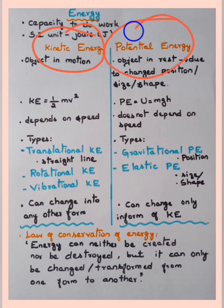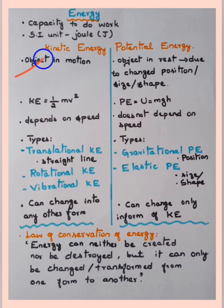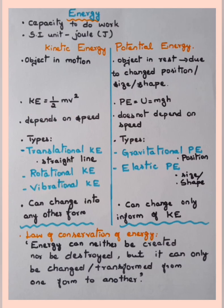Kinetic energy is possessed by an object when it is in a state of motion, whereas potential energy is possessed by an object when it is at rest — due to a change in position, size, or shape of the object. The formula for kinetic energy is KE = ½mv², and potential energy is U = mgh, where m is mass, g is gravity, and h is the height of the object. Kinetic energy depends on the speed of the object.